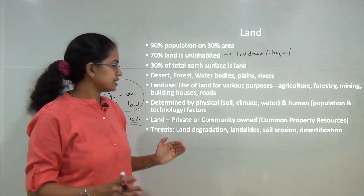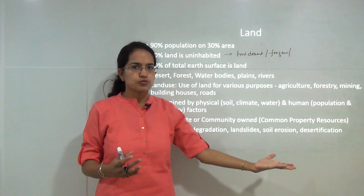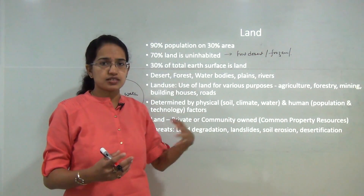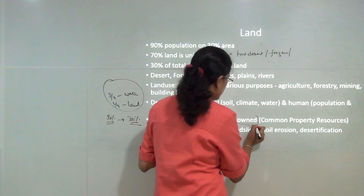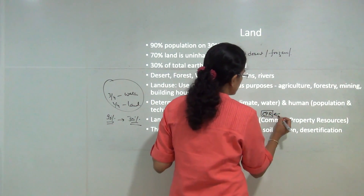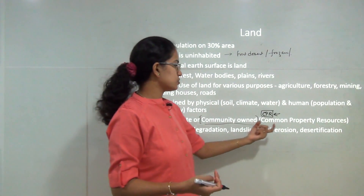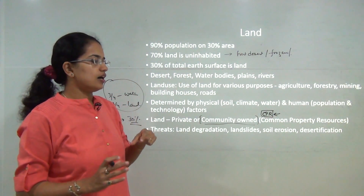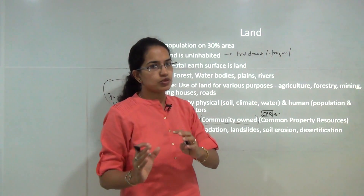Land can be classified as privately owned - for example, a house is private property - or as community-owned resources, such as government gardens or roadways. These are known as Common Property Resources, or CPR. CPR has been an important terminology, with focus on their improvement. Funding for CPR comes from local bodies: municipal corporations in cities and panchayats in villages.